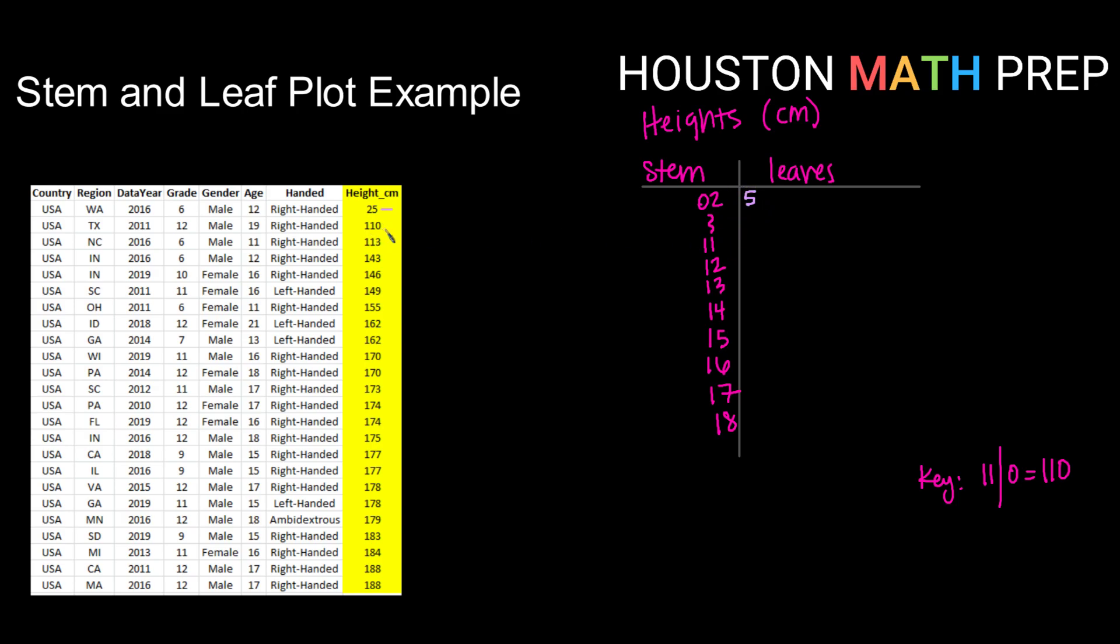When I get to the 11 stem, I have a 0 leaf and a 3 leaf. So I'm going to put 0 comma 3. I don't have any 12s. I don't have any 13s. So I'll just leave those blank.